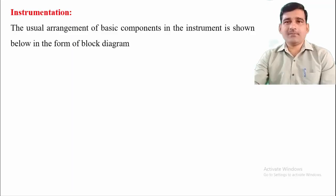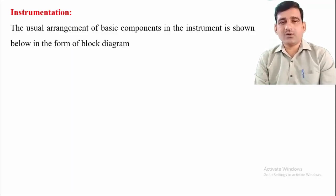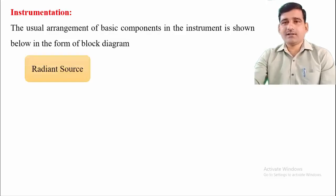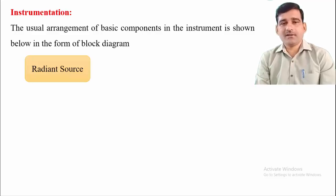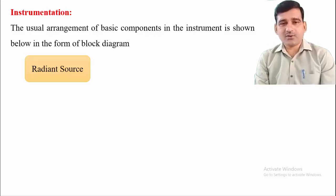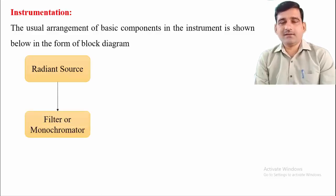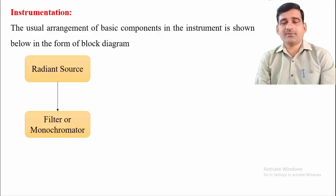If we see the block diagram of the instrumentation of the spectrophotometric technique, it shows how the components are arranged. The first component is called the radiant source — the light that falls on the sample — which gives absorption spectroscopy. This radiant source emits light that travels through space and then enters into the filters or monochromator.